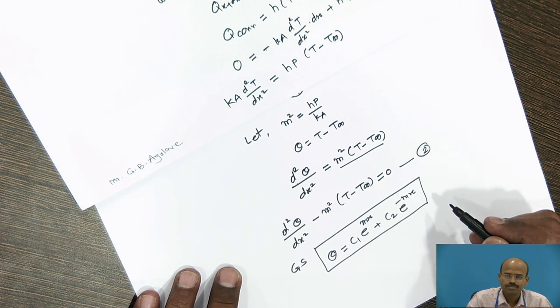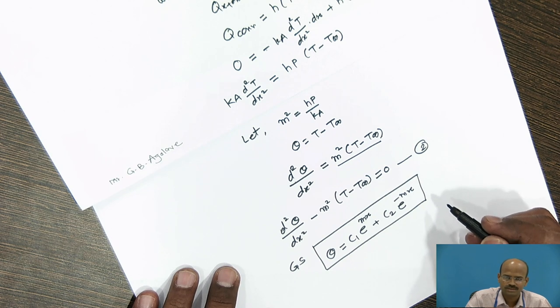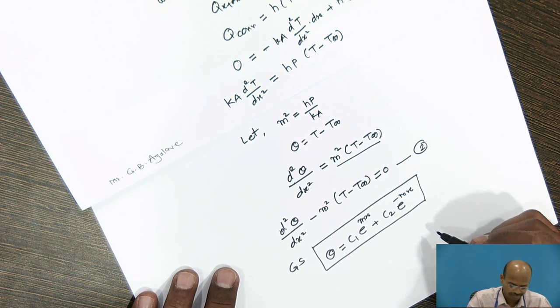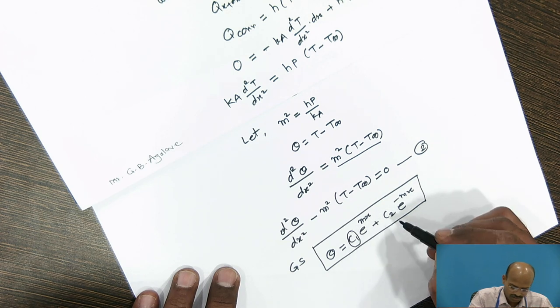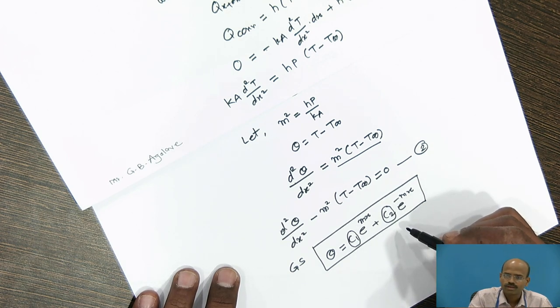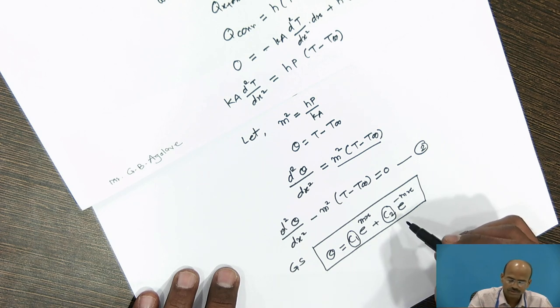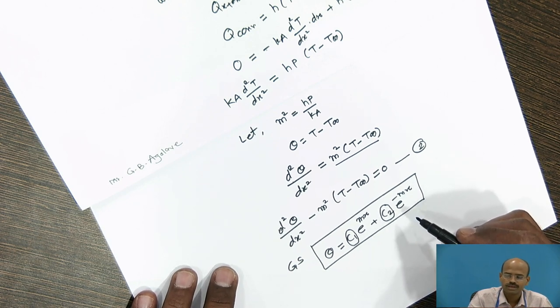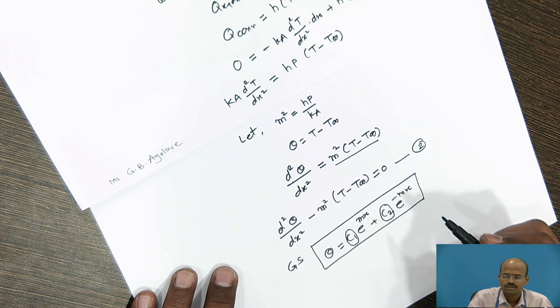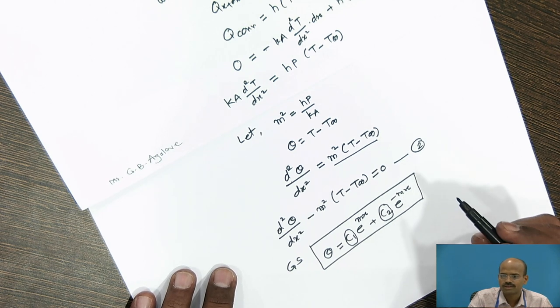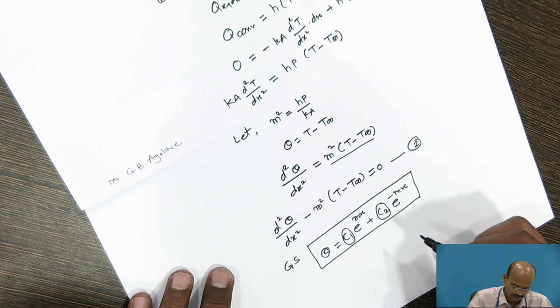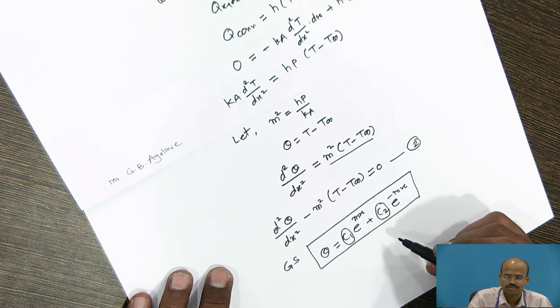Depending upon the fin cases, we can get the constant values c1 and c2. By using c1 and c2 we may get temperature profile and rate of heat transfer equations. These are three cases in next part we will see.